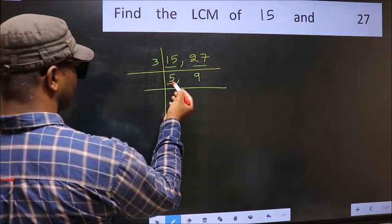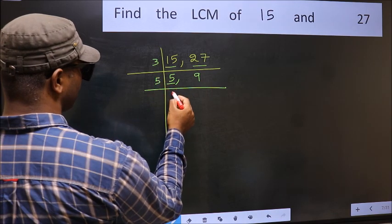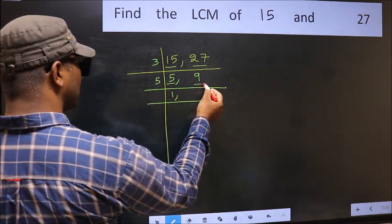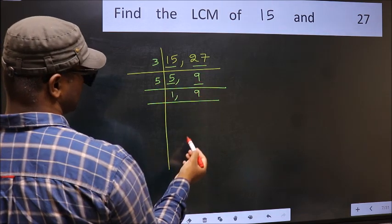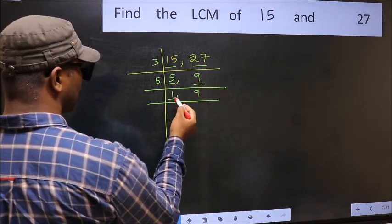Now here we have 5. 5 is a prime number, so 5 times 1 equals 5. The other number 9 is not divisible by 5, so you write it down as it is. Now we got 1 here.